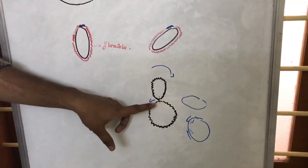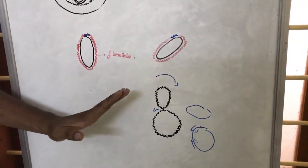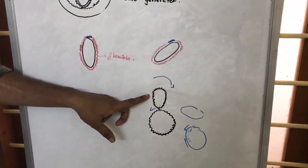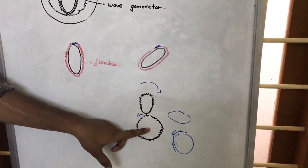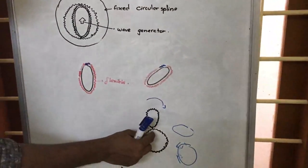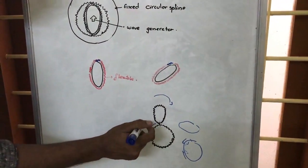When the elliptical gear completes one complete revolution, what happens is the teeth of this elliptical gear will interlock with the teeth of the circular gear twice. That means first at this position both teeth will be interlocked, and then...